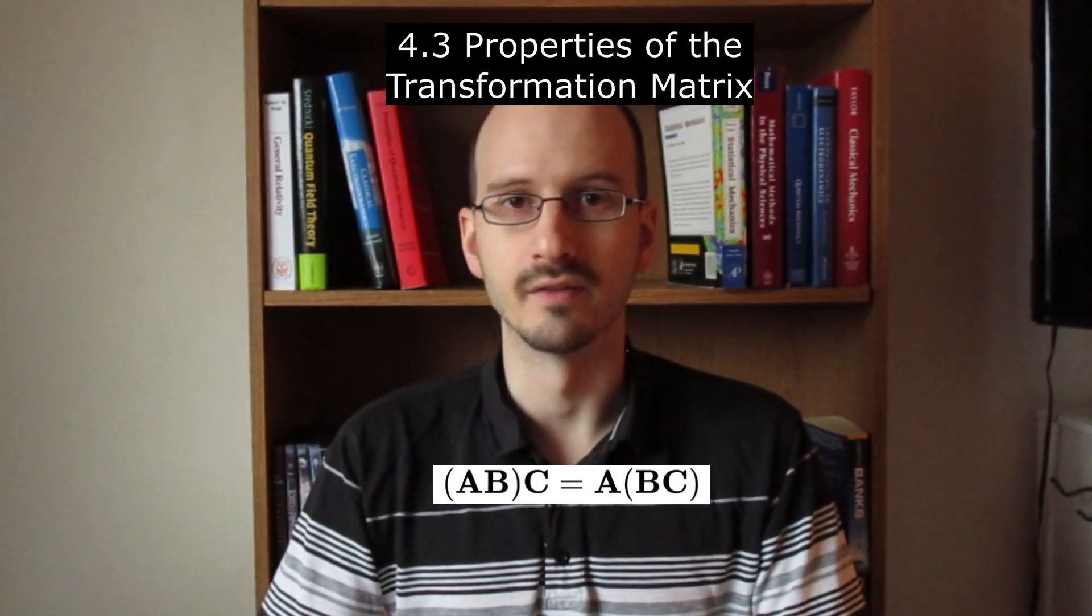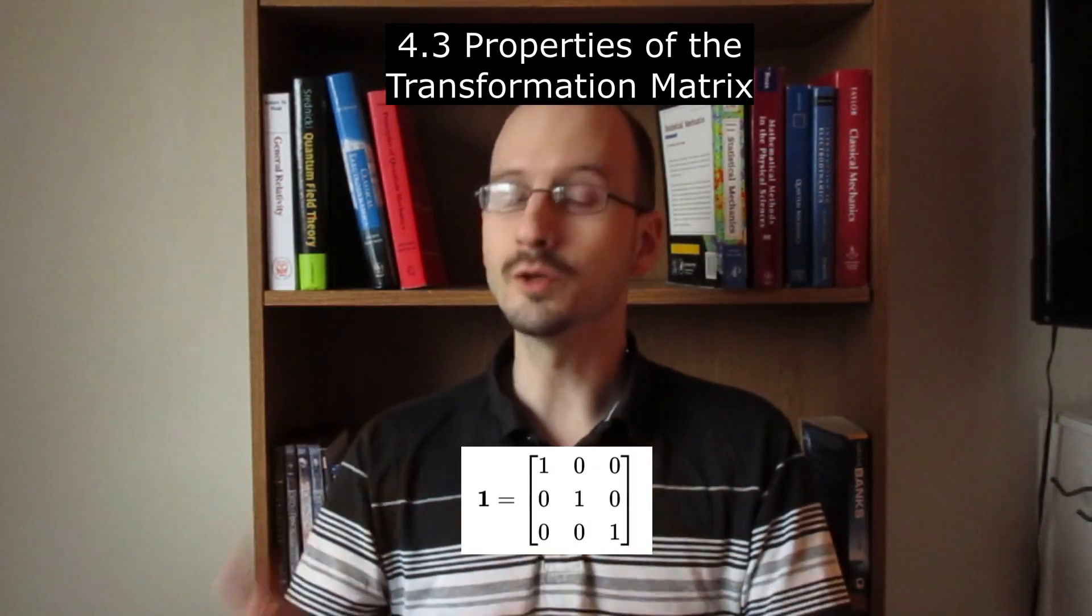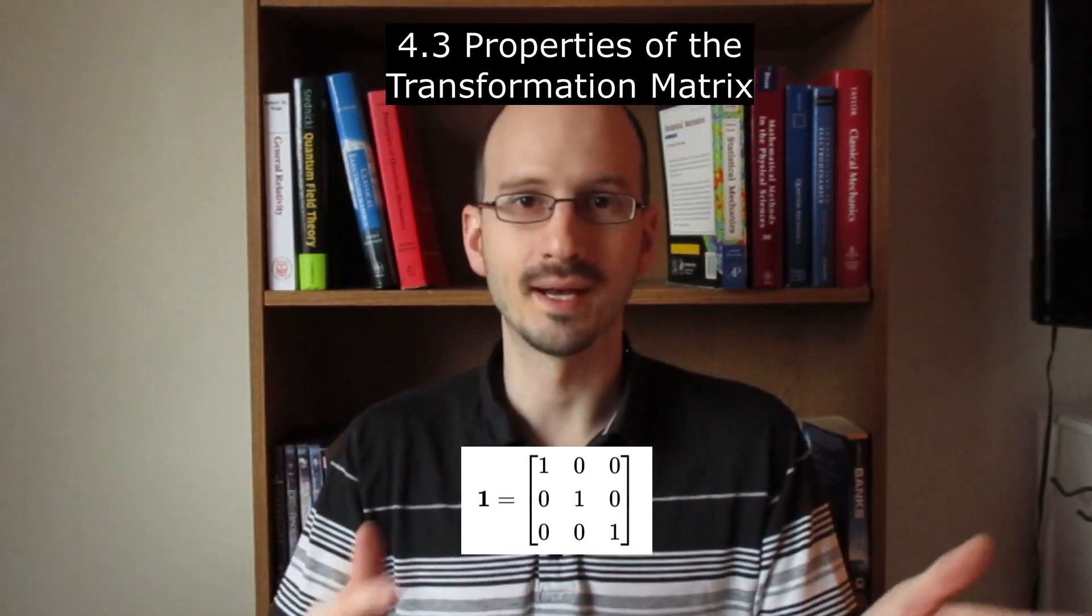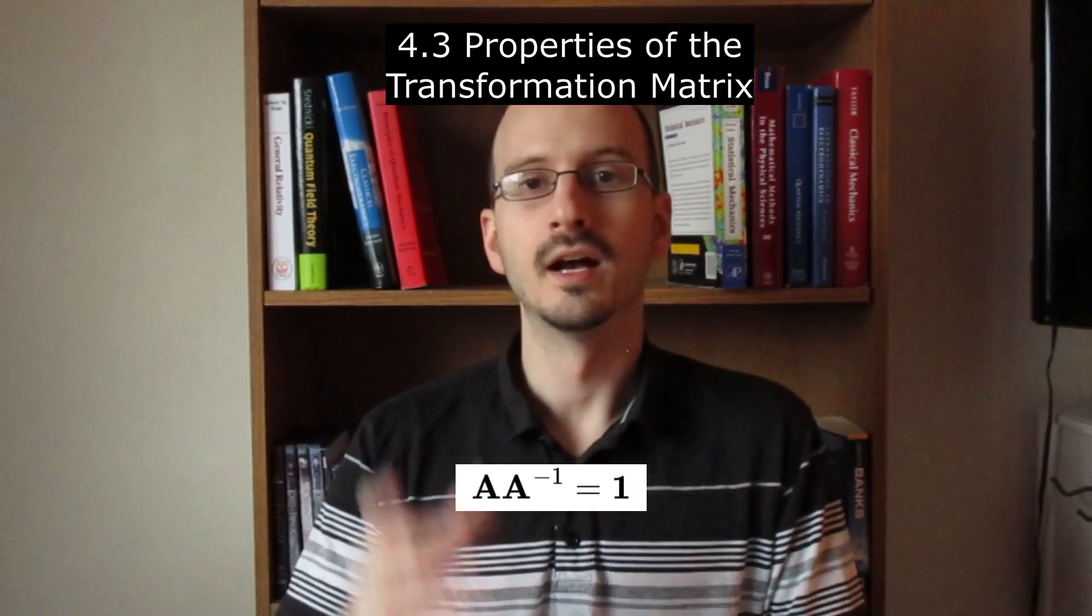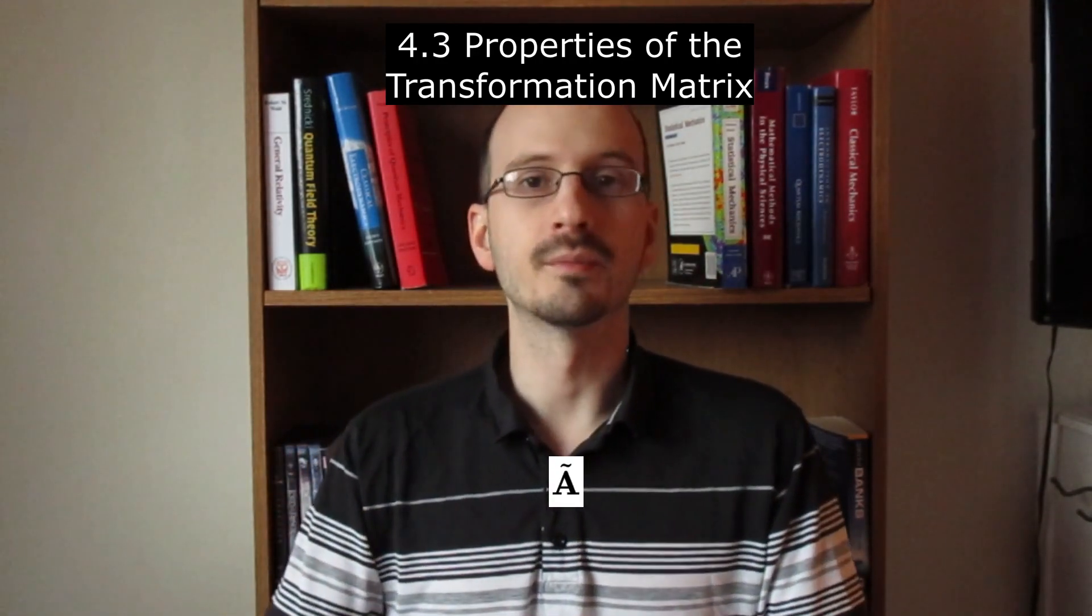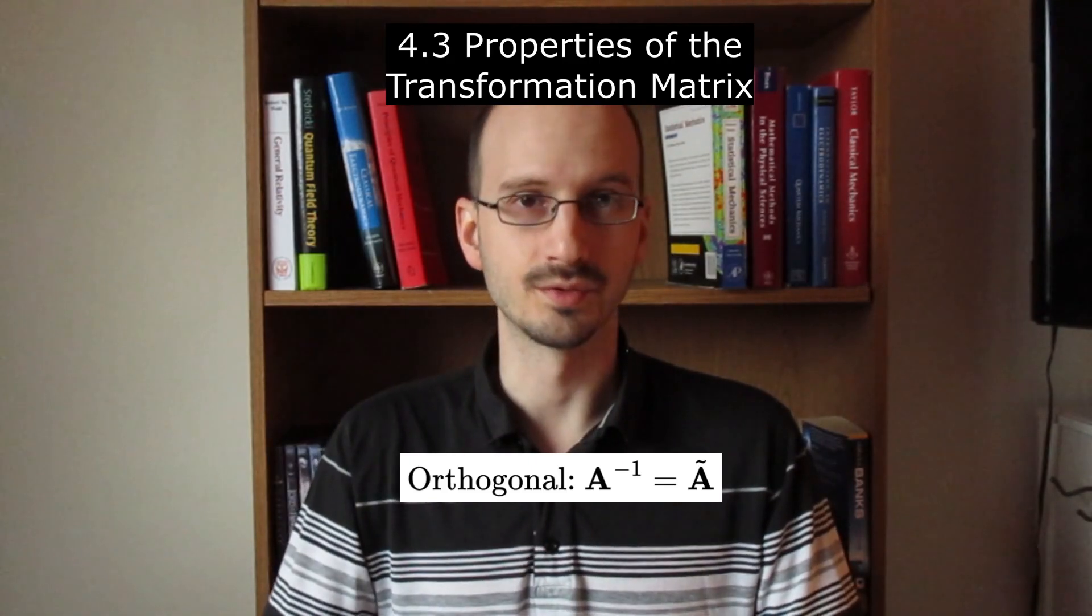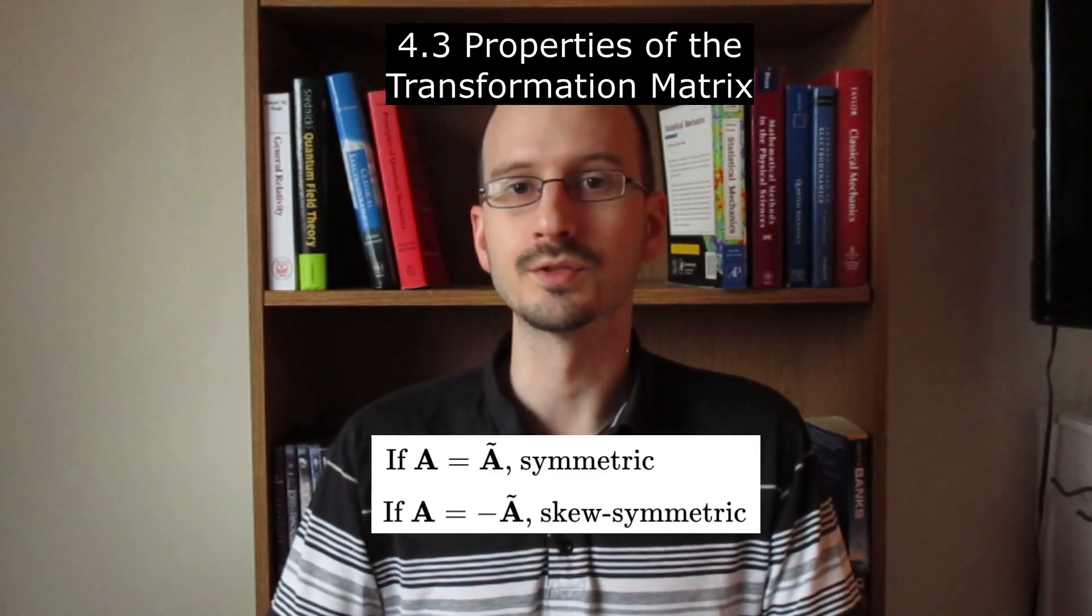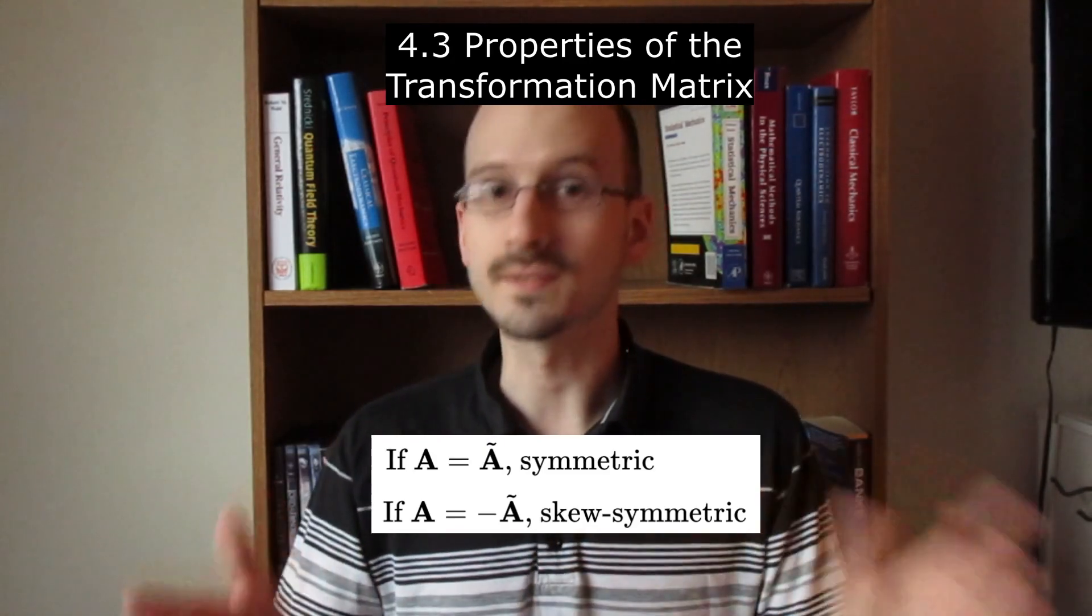They are associative, however, so you can do matrix operators left to right or right to left. There is a unit matrix represented by a one where if you multiply any matrix by it, you get the same matrix back. From this we can define the inverse of a matrix. A matrix times its inverse equals the unit matrix. The transpose of a matrix switches the rows and columns. The inverse of an orthogonal matrix is its transpose, which is super convenient. If a matrix is equal to its transpose, it's called symmetric. If a matrix is equal to the negative of its transpose is called skew symmetric.